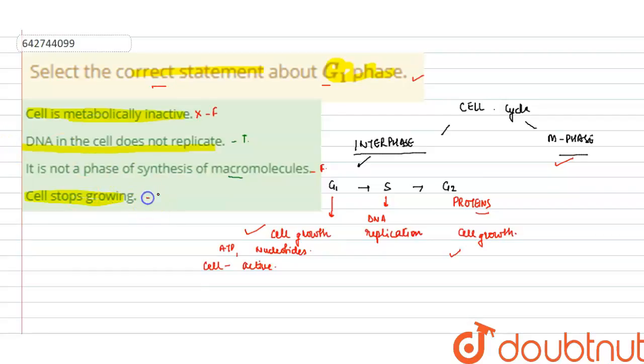Next statement: cell stops growing. No, cell growth occurs. The basic statement that I mentioned initially is that cell growth occurs in the G1 phase. Hence, our correct answer is the second, that is DNA in the cell does not replicate, because its replication occurs in the S phase.